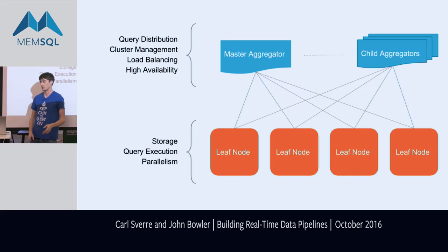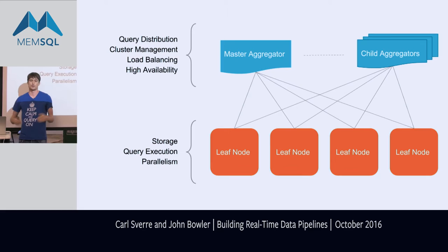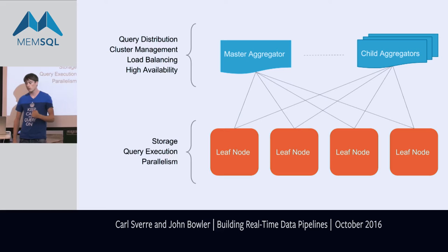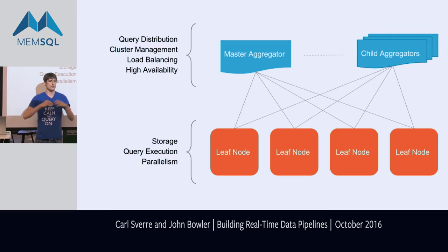In MemSQL we have two primary roles in the cluster. Think of a collection of Linux machines: we have aggregators and leaves. Aggregators are responsible for metadata-level concepts — DDL, create table statements, create pipeline statements. Master and child aggregators collectively handle failover, high availability, cluster management, and query distribution. When a SELECT or INSERT query comes in, we take those queries and shard them down to leaf nodes. Leaf nodes are never directly connected to your app — you connect to the aggregators, which shard queries down.